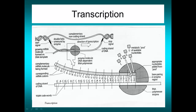RNA polymerase then forms the phosphodiester bonds between the RNA nucleotides. The RNA nucleotides are CTP, ATP, UTP, and GTP.